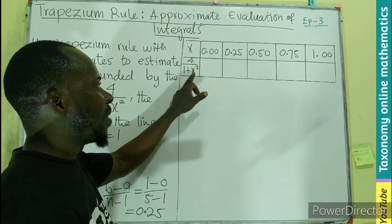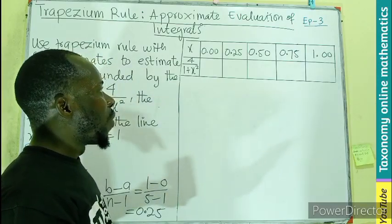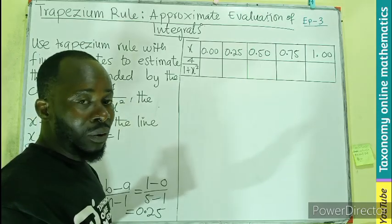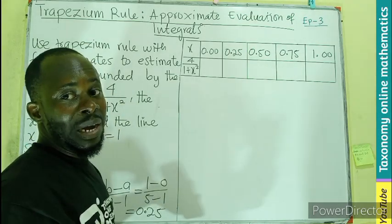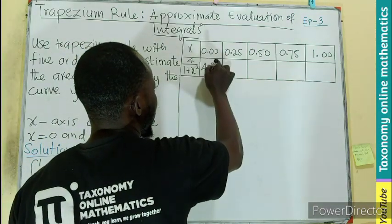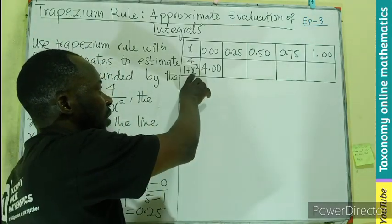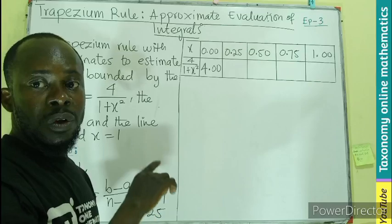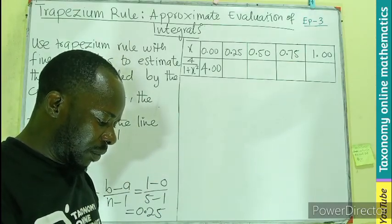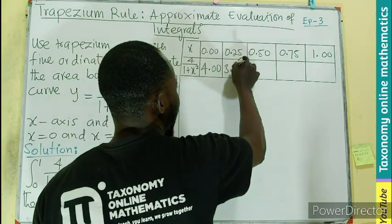the position of x with these numbers. When x = 0, we get 4/1 = 4.00. Then when I put 0.25 in place of x, that gives you 3.764.